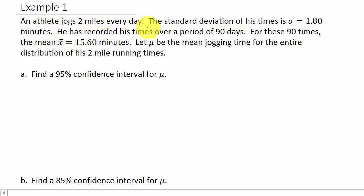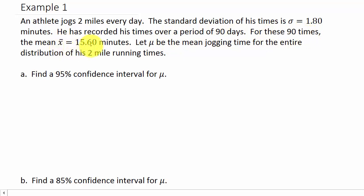Our first example: an athlete jogs two miles every day. The standard deviation of his times is sigma equals 1.8 minutes — notice they give us sigma, so sigma is known. He has recorded his times over a period of 90 days, and for these 90 times the mean is X-bar equals 15.6 minutes. Let mu be the mean jogging time for the entire distribution. Find a 95% confidence interval for mu.